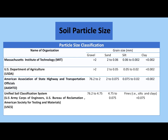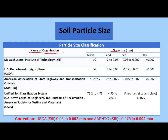The particle size classification table shows the name of each organization and the corresponding grain size limits in millimeters. For example, under the MIT system, gravel is classified as particles greater than 2 mm, sand is between 2 and 0.06 mm, silt is between 0.06 and 0.002 mm, and clay is less than 0.002 mm. Under USDA, gravel is greater than 2 mm and sand is between 2 and 0.05 mm.